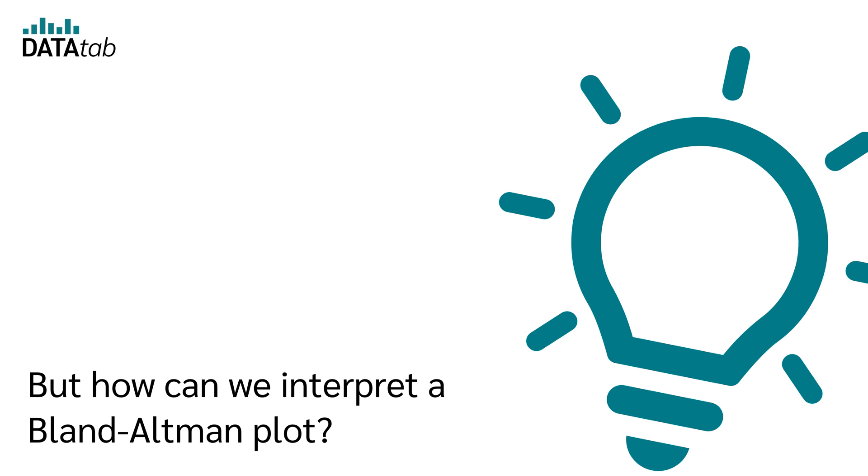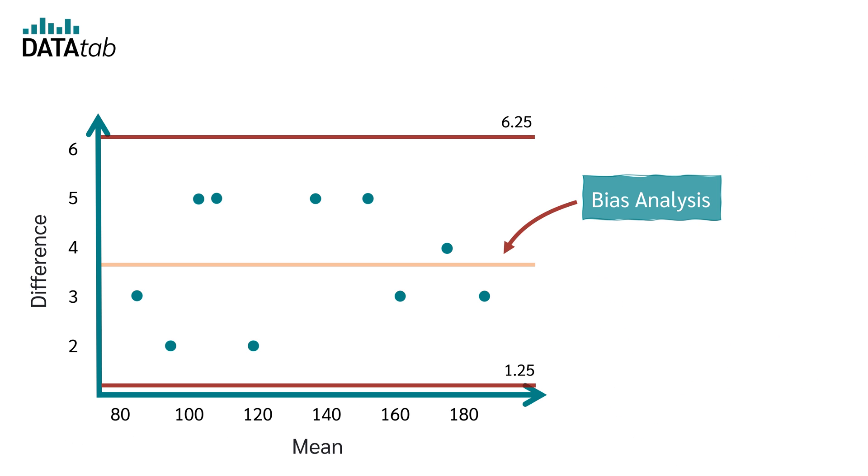But how can we interpret a Bland-Altman plot? Let's take a closer look at the bias analysis, the scatter analysis, and the limits of agreement.